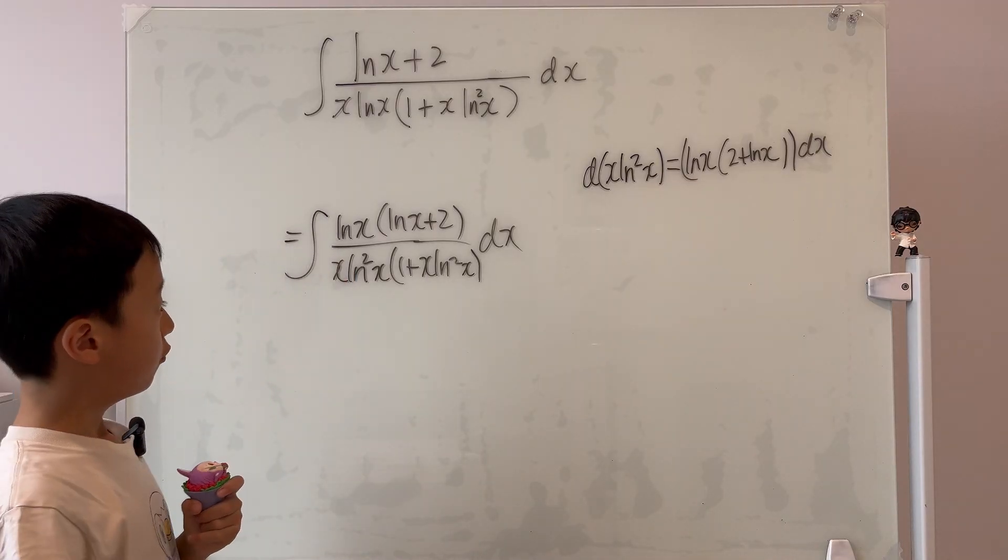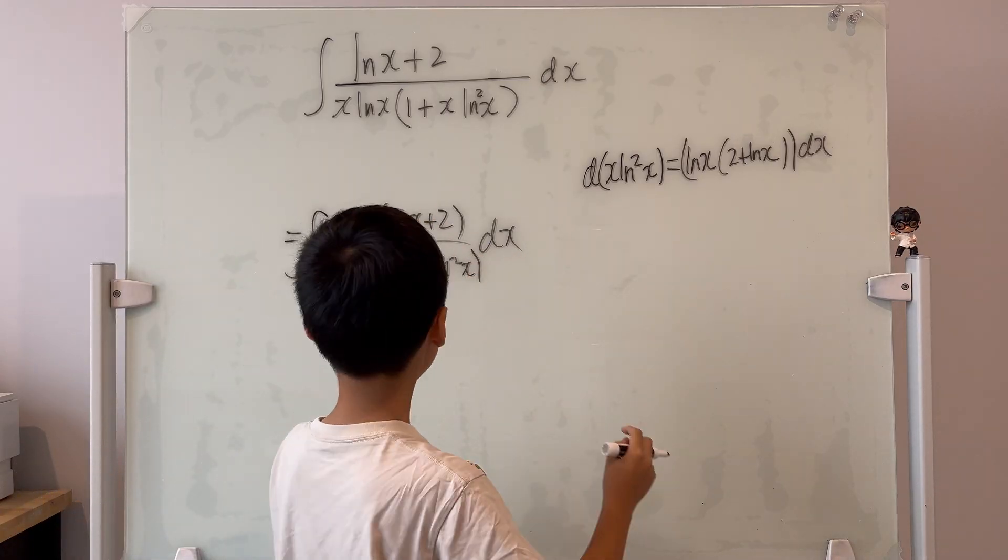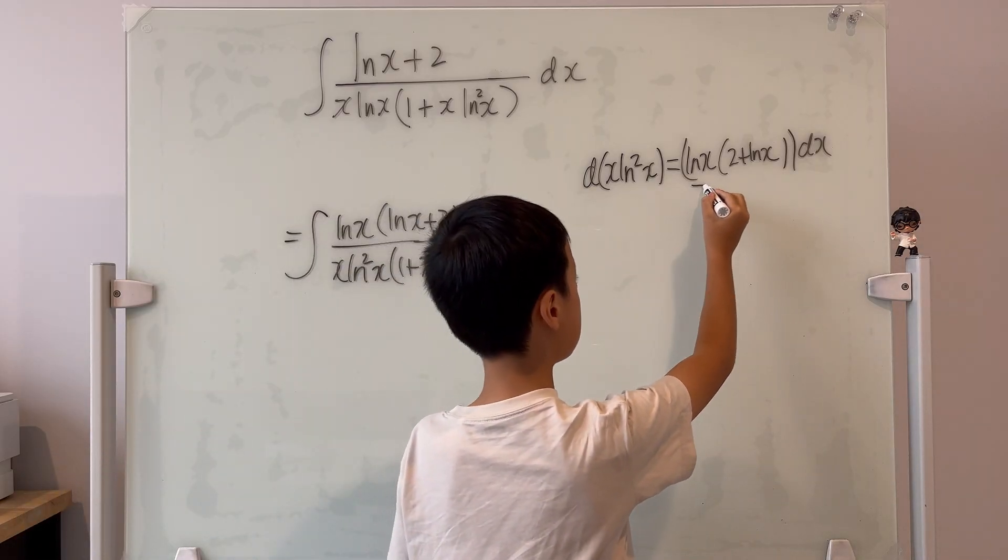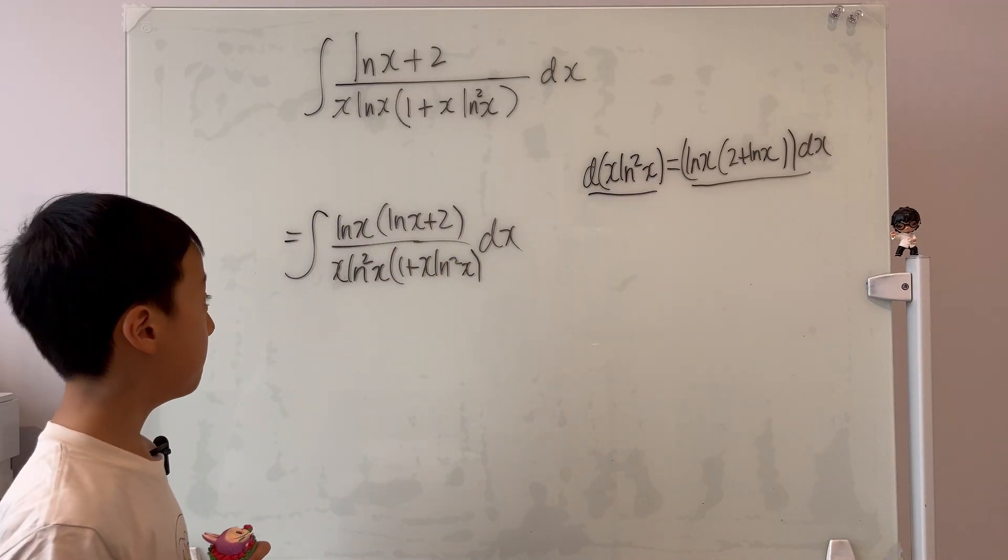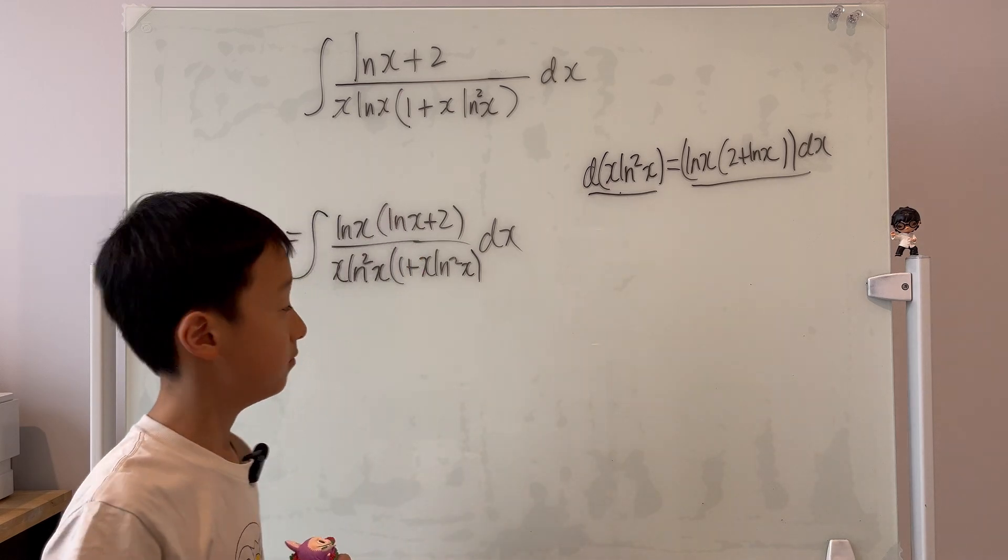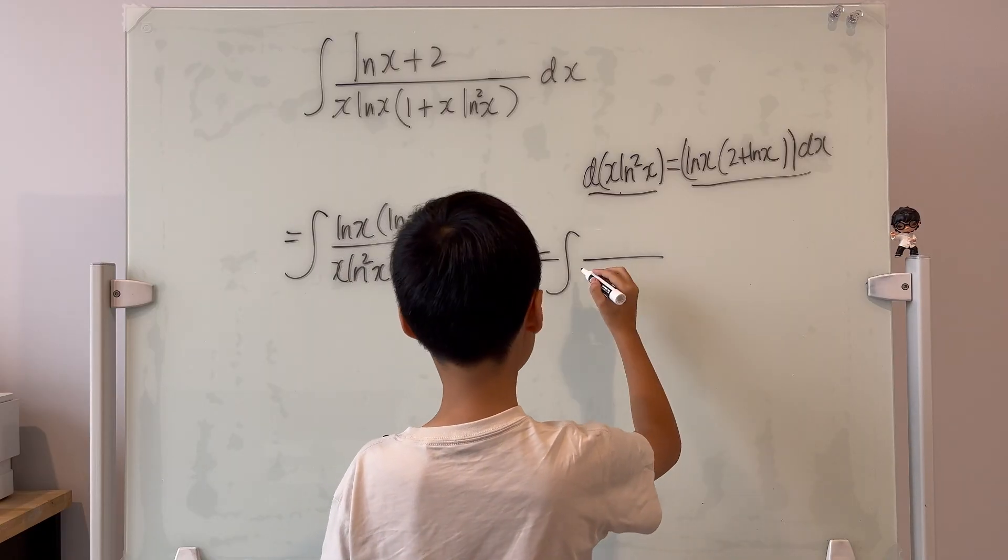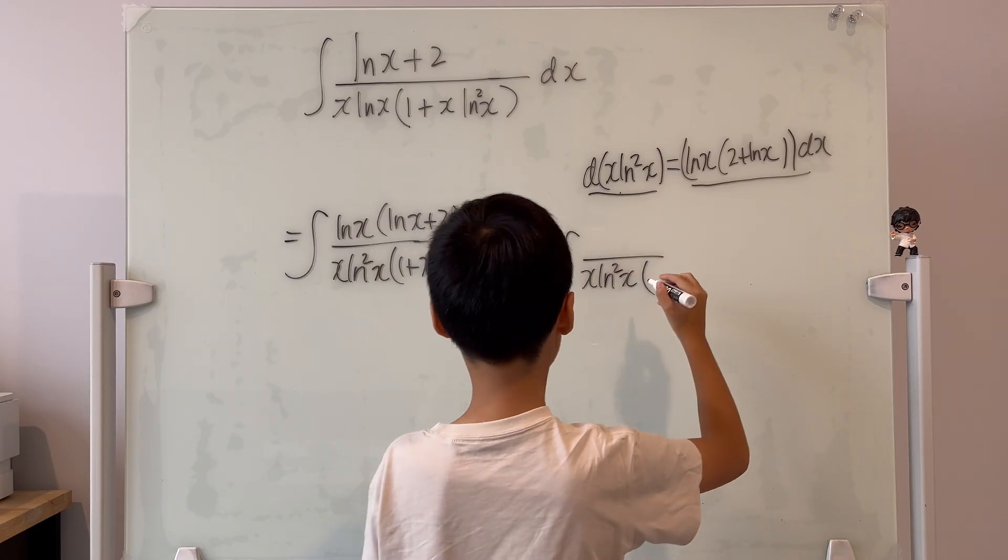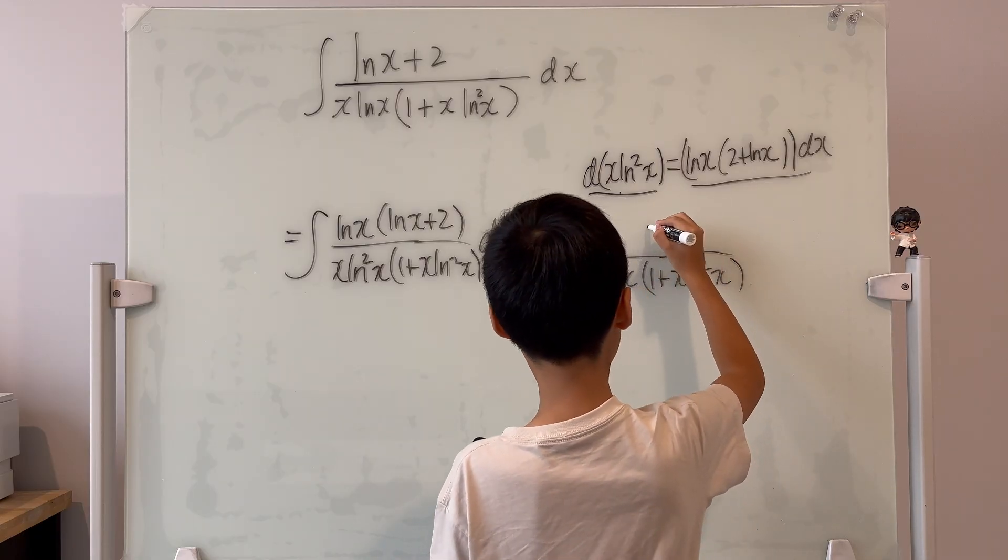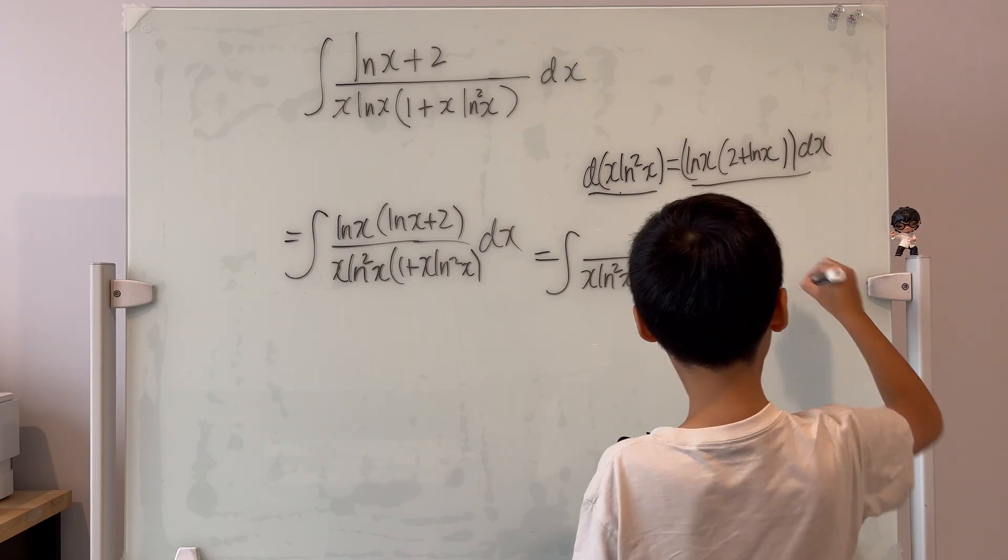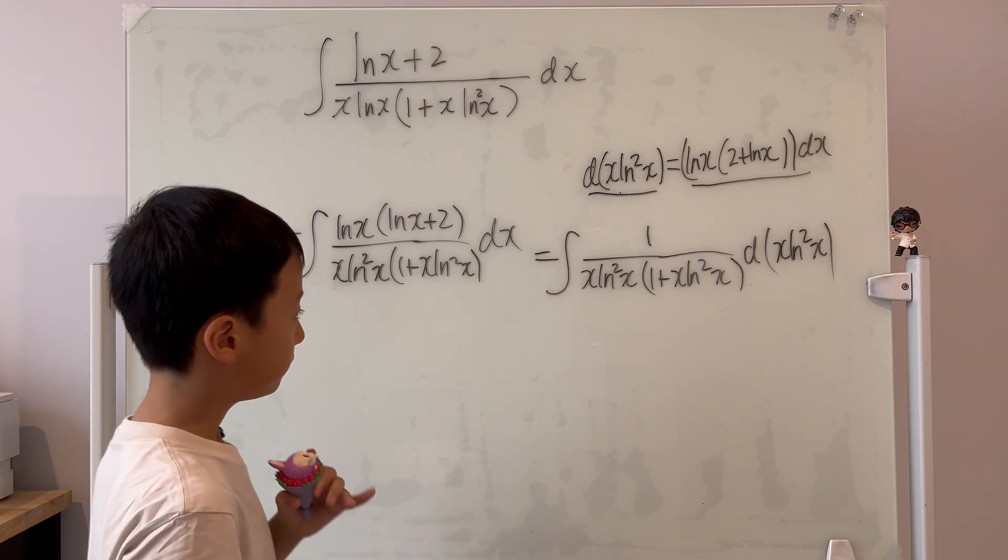So the integral becomes the integral of ln x multiplied by ln x plus 2, bottom being x times ln x squared times 1 plus x times ln x squared dx. Well, now, we can convert the numerator and dx into, look, the numerator with the dx is this, right? And that becomes d of x ln x squared. So we can combine these two terms into one single term.